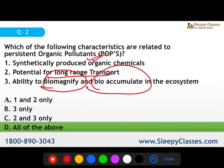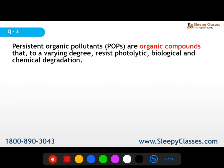POPs are organic chemicals that are synthetically produced. They have potential for long-range transport because they are not water-soluble — they are fat-soluble — and can travel far. They enter the ecosystem and are bio-magnified and bio-accumulated across trophic levels. They also resist photolytic, biological, and chemical degradation, which is why they are called persistent.